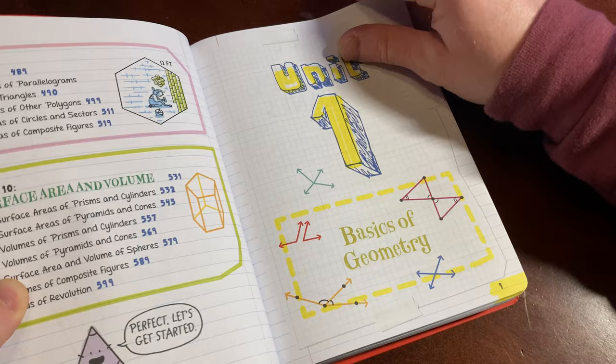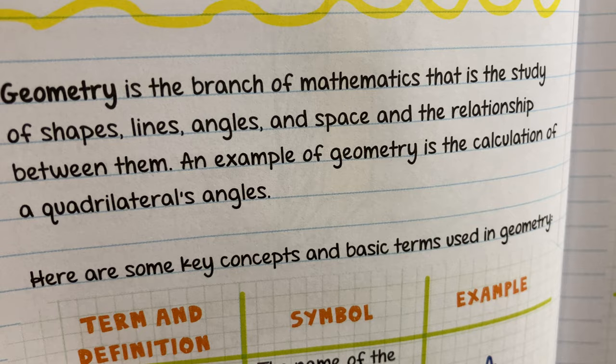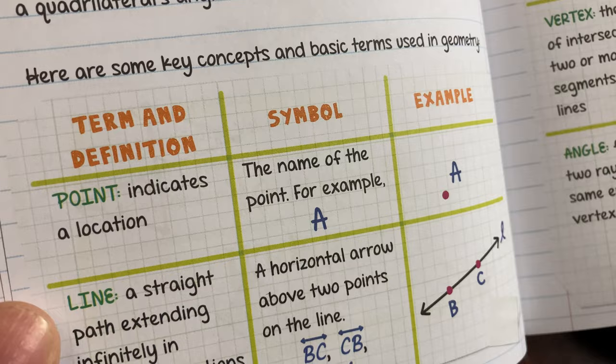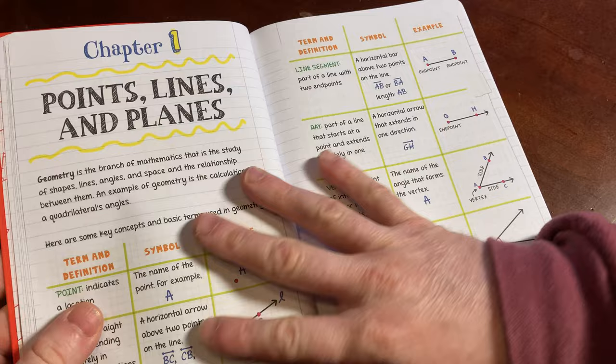Geometry is the branch of mathematics that is the study of shapes, lines, angles, and space, and the relationship between them. An example of geometry is the calculation of a quadrilateral's angles. Here are some key concepts and basic terms used in geometry: point, line, line segment, ray, vertex, angle. So just things that you should know. And that's good. I like how it does it like this. This is kind of nice.